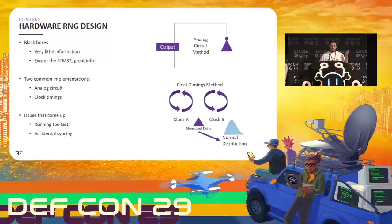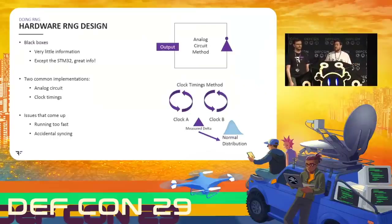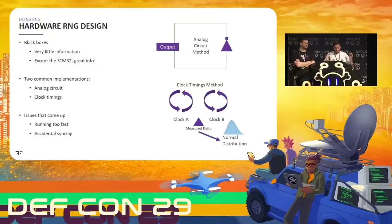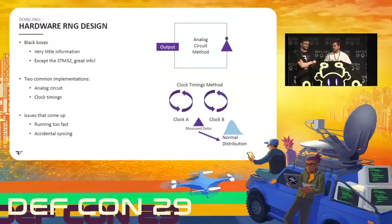The other way is with two clocks running at different speeds — two independent clock sources, say two quartz crystals. You measure the difference between the two. Because they're not tied together, there will always be a little difference in time, and you can measure that delta to get a normalized distribution. This is actually something that comes up in tool-assisted speedruns on a Super Nintendo, which uses two different clocks — one for the main CPU and one for the audio processor — making it very hard to get deterministic results. But most of the time these hardware RNGs are implemented as a black box where you just get the result out.